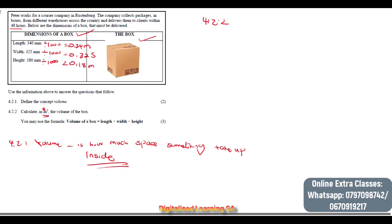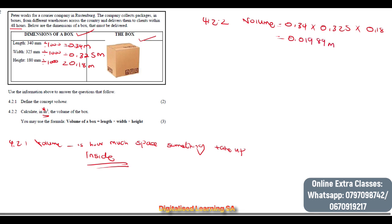Now we calculate our volume. Volume equals length multiplied by width multiplied by height: 0.34 × 0.325 × 0.18. If we plug this into our calculator we get 0.01989 cubic metres, and that would be our answer.